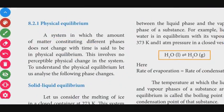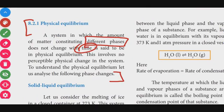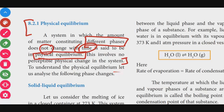Physical equilibrium is defined as a system in which the amount of matter constituting different phases does not change with time. This involves no overall physical change. This is the definition of physical equilibrium.